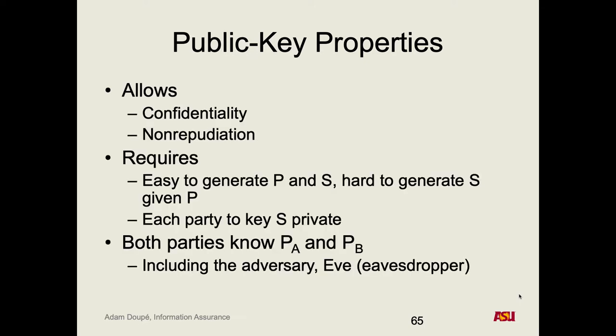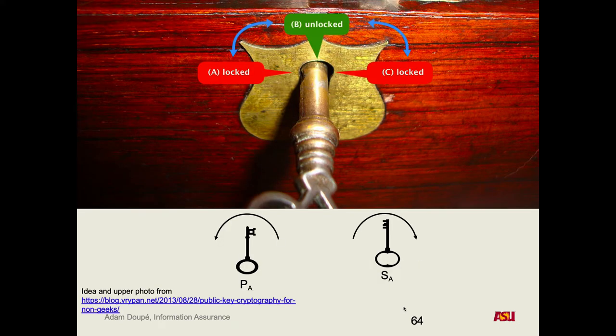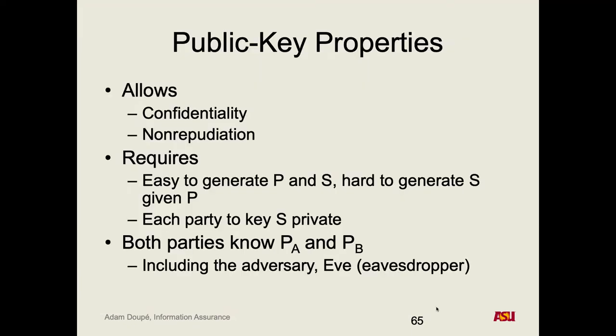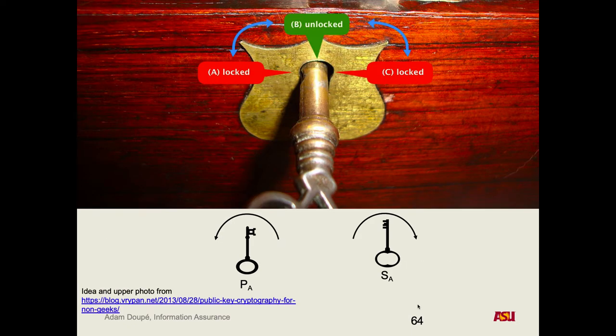We're going to get into different properties here. We're going to see how we can get confidentiality and non-repudiation, which are great properties. But we have a key requirement here. This is fundamentally different than symmetric crypto, where we had the exact same key that both parties needed to know. So for this box scheme to work, if you have my public key, what should you not be able to do? You shouldn't be able to figure out my private key, right? Because I give the public key to literally everyone — it's in the name — where the secret key is kept secret with the user.